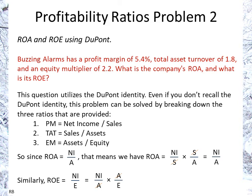Net income over assets is what we have as an answer for ROA. We can break it down further into net income over sales times sales over assets times assets over equity — they cancel each other out, and we get that answer. You can see those are the three ratios that are provided here.